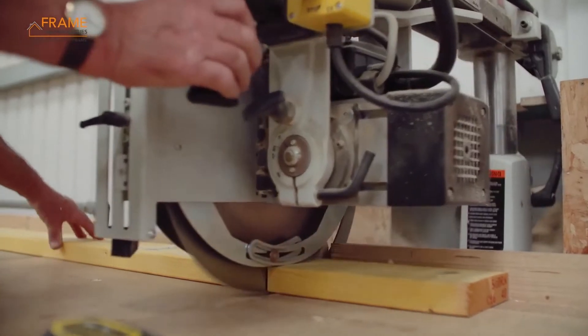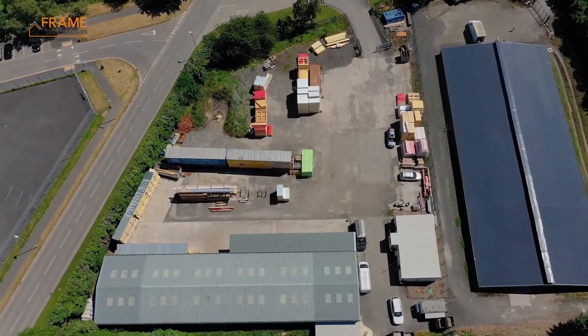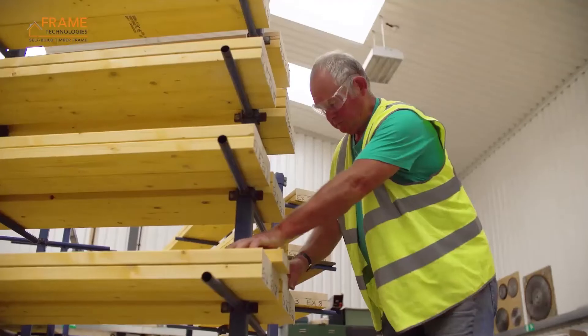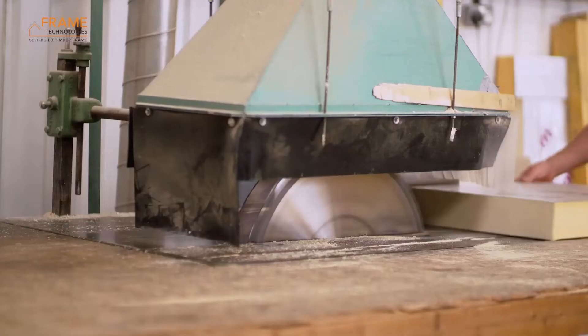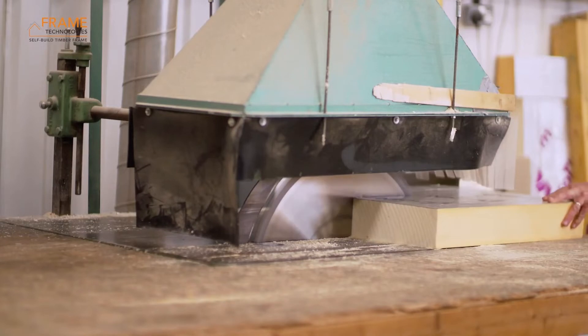Our TechVantage systems are at the forefront of structurally insulated panel technology, delivering exceptional energy efficient building envelopes which can achieve U-values from 0.30 down to less than 0.09.